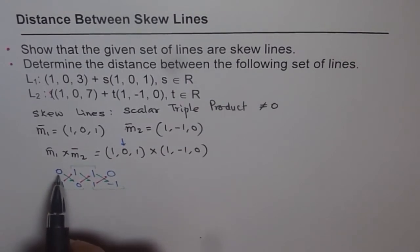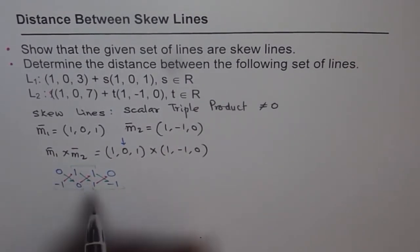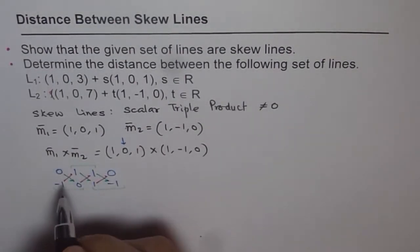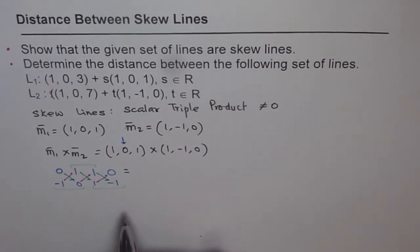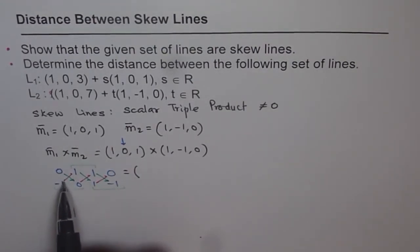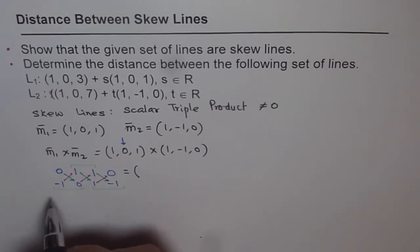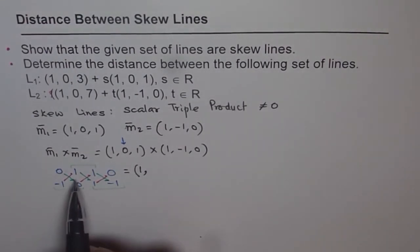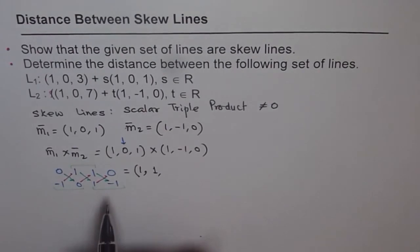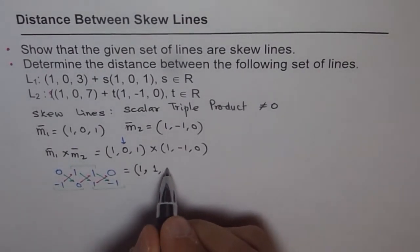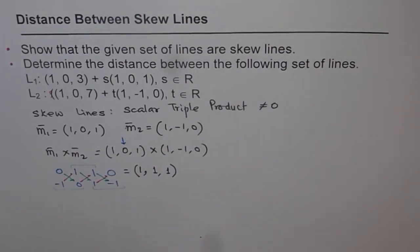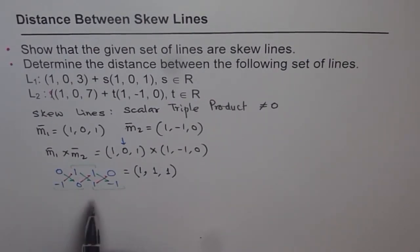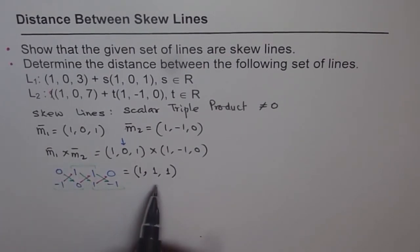So M1 cross M2: the i component is 0 minus (−1 × 1) = 0 minus (−1) = 1. The j component is 1 minus 0, which is also 1. And the k component is 1 minus 0, which is 1. So M1 cross M2 = (1, 1, 1). The problem has been designed simply so I could quickly demonstrate the concept on video.